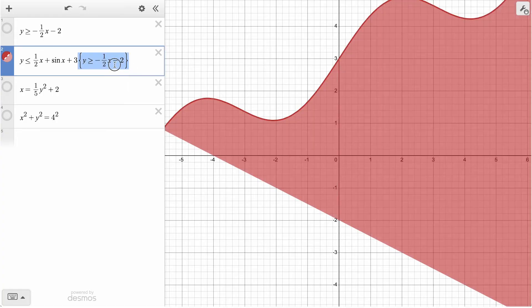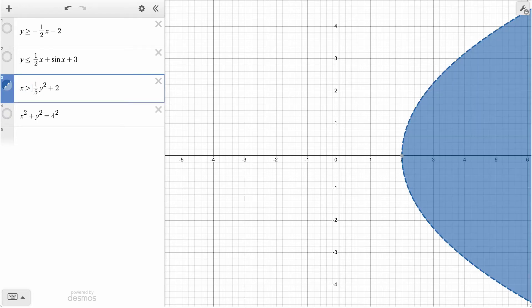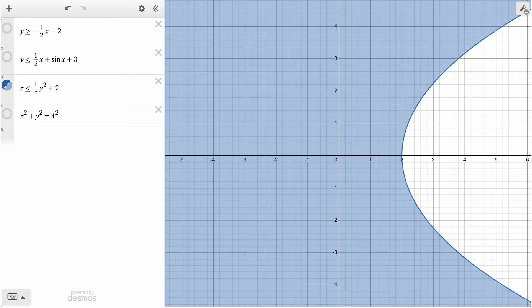Shading works the same for our last two expressions, even though they aren't functions of x. For the sideways parabola, we can shade to the right or left of the curve using an inequality to indicate the region of x values greater than or less than our expression of y values.